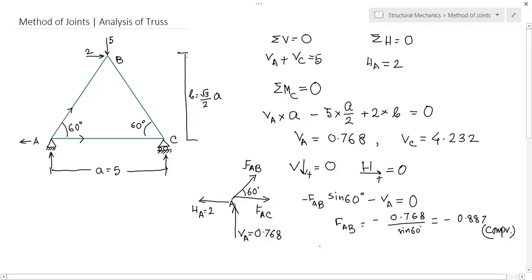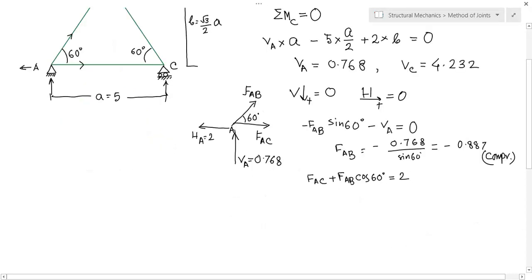You get FAB. For the horizontal directional force, FAB cos 60 plus FAC minus HA equals to zero.